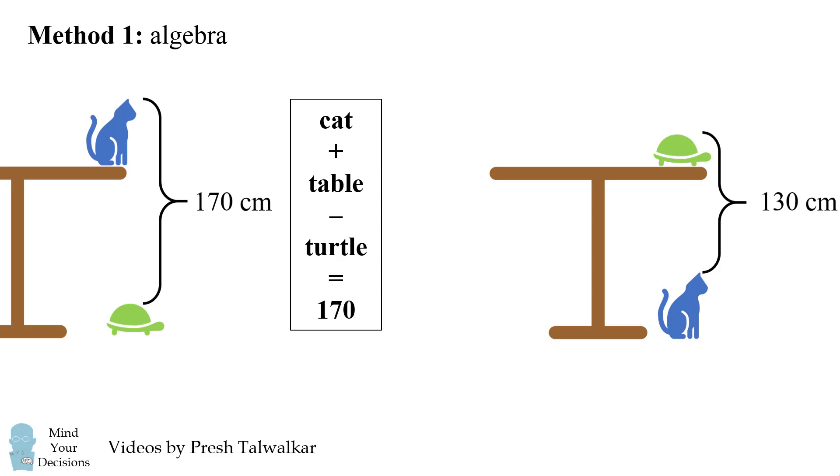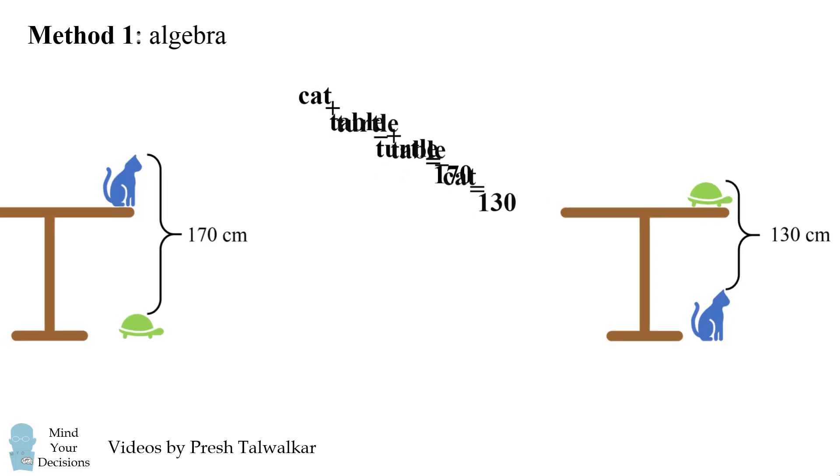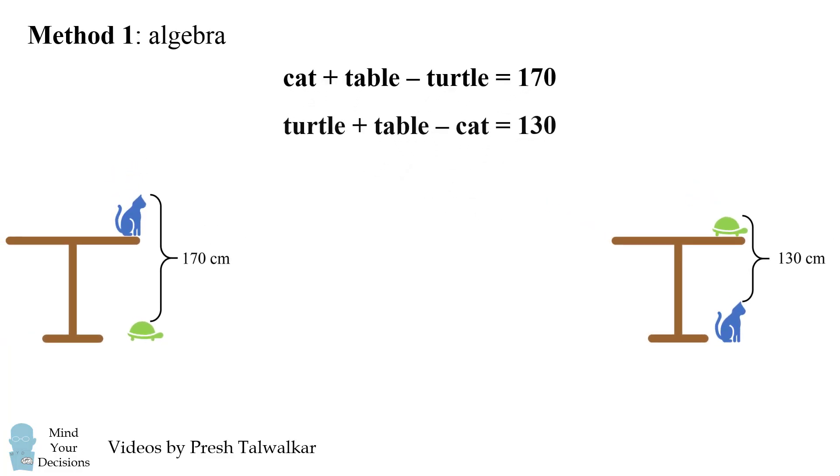The second picture will correspond to the equation: the height of the turtle plus the height of the table minus the height of the cat is equal to 130. So now, from these two equations, we need to solve for the height of the table.